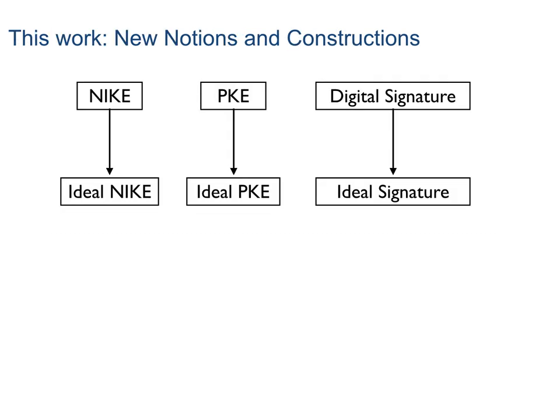In our work, we consider three primitives in the public-key setting: KEM (key encapsulation mechanism), public-key encryption, and digital signature. We propose three ideal notions for them: ideal KEM, ideal PKE, and ideal signature. Due to time limits, we will only focus on the first one — ideal KEM.